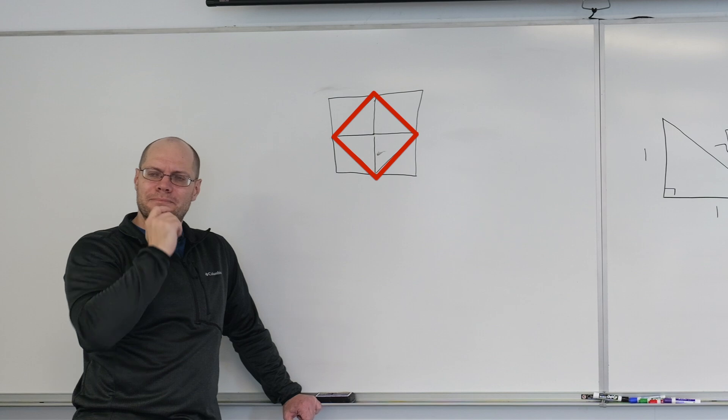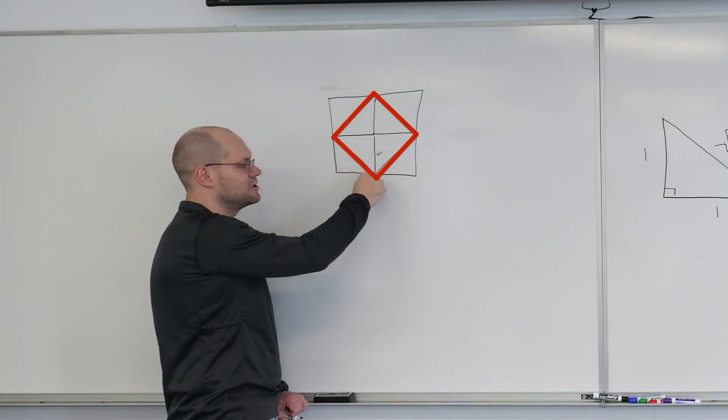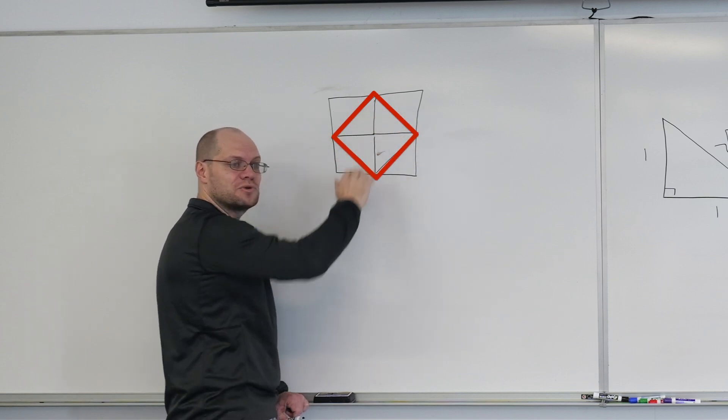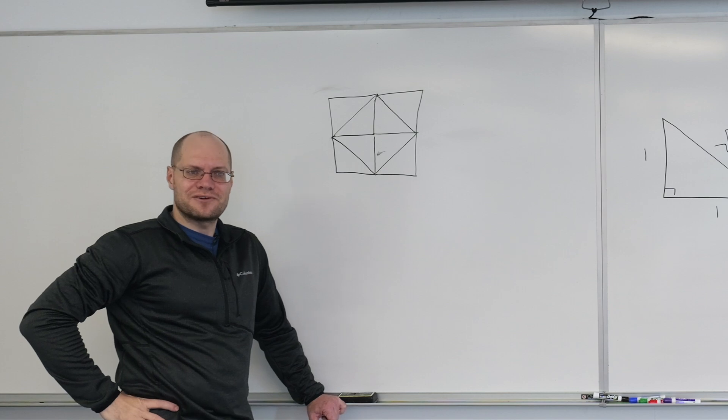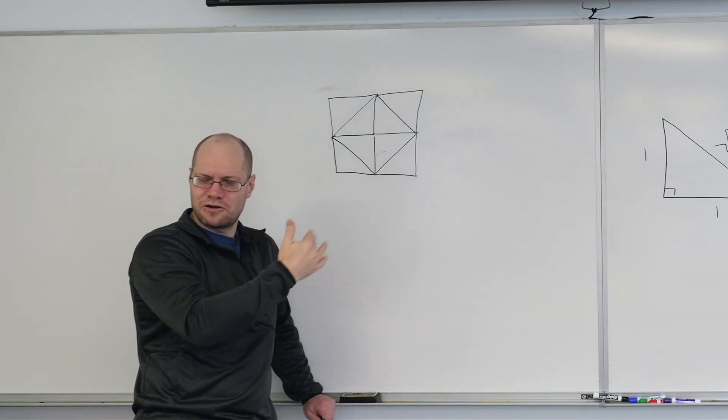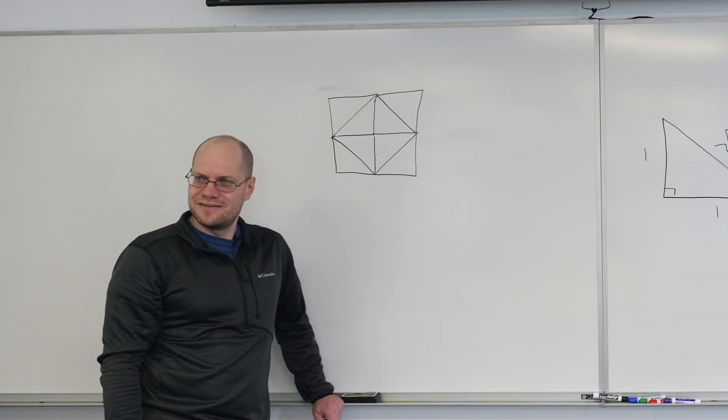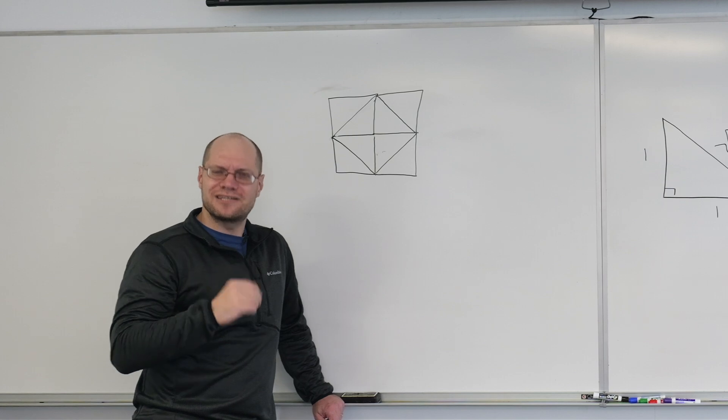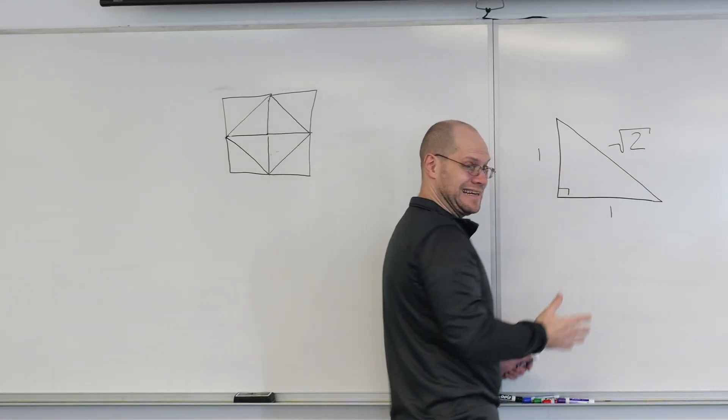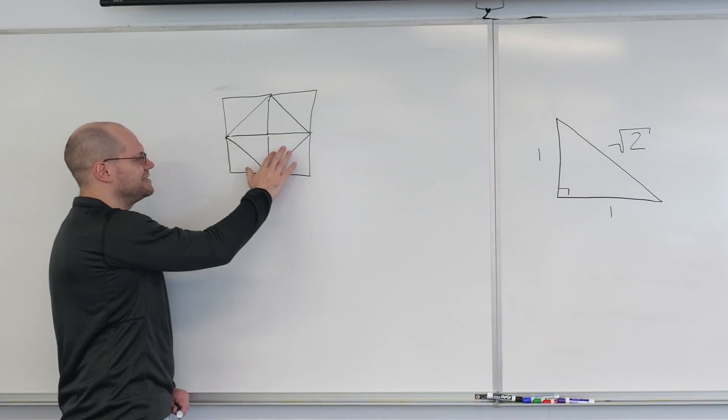A modern person would say, of course, because this is square root of two, so the area of the square is square root of two squared. So that's good. The square root of two can almost stay behind the scenes and never be mentioned. I think the Greeks liked that idea - that we don't understand the square root of two, it's not a number, that's a problem, but we can kind of circumvent it a little bit.